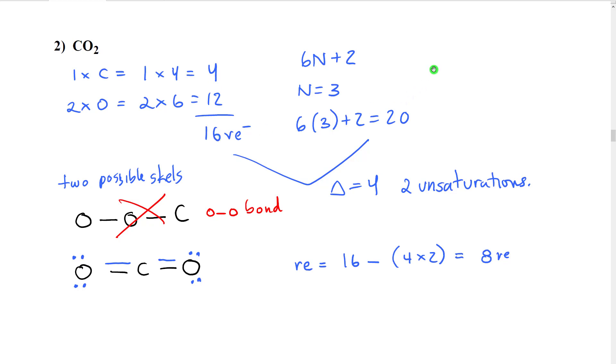Again, we already calculated 6n plus 2 earlier. But just to review, we have one carbon and two oxygens. That's a total of three non-hydrogen atoms. Six times three plus two is 20. If we compare these two numbers, we can see that we have a delta of four. For every two in the delta, we have one unsaturation. So therefore, we have two unsaturations.